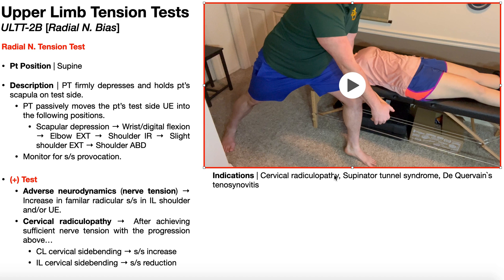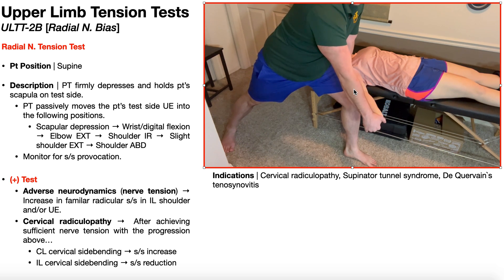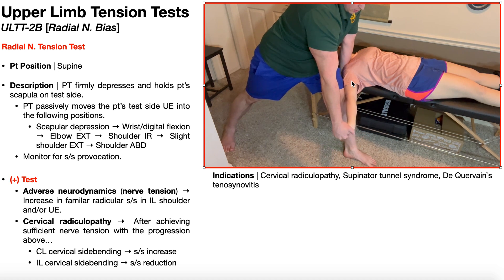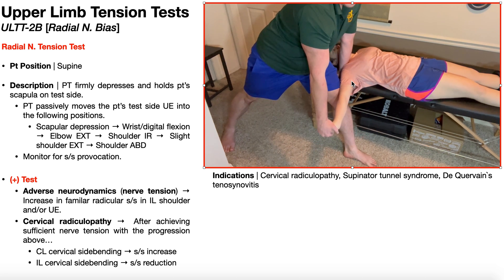So I've got elbow extension and shoulder internal rotation, and I'm also going to induce a little bit of shoulder extension — I'm actually going to allow her arm to drop a little bit downwards towards the floor. Then there's the shoulder abduction.